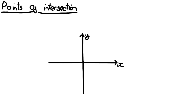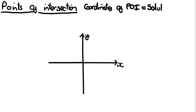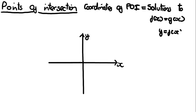This is on points of intersections. Recall that the coordinates of points of intersections, say for two lines f(x) and g(x), are going to equal the solutions to f(x) = g(x). The x-coordinate will represent the actual solution, and the y-coordinate will represent the value both equations give out, which will be the same value.